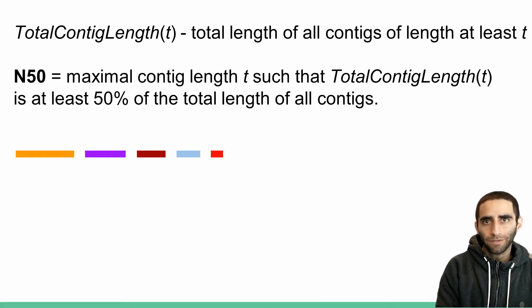The 50 in N50 corresponds to 50%, so 50% of the total length. This probably still sounds complicated, but let's work through an example. Let's imagine that our five contigs have the following lengths: 70, 60, 30, 20, and 10.